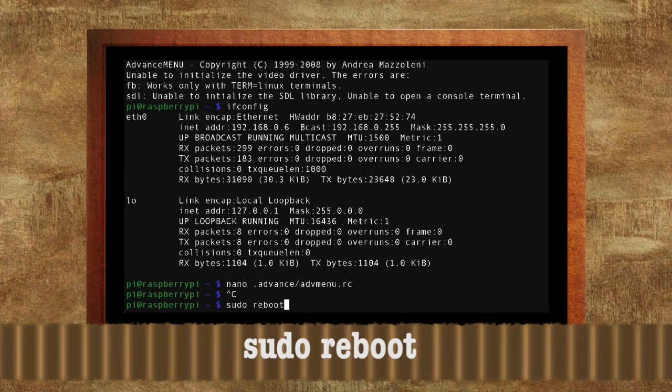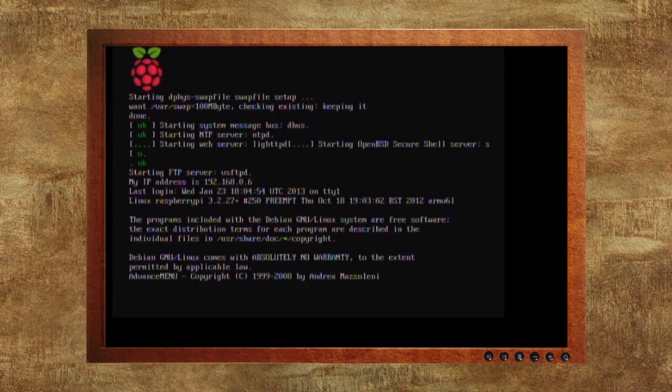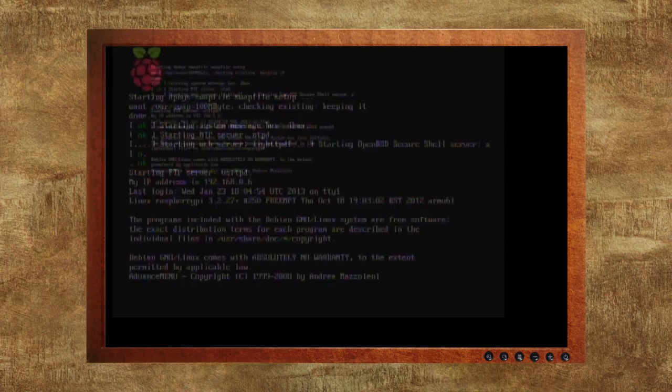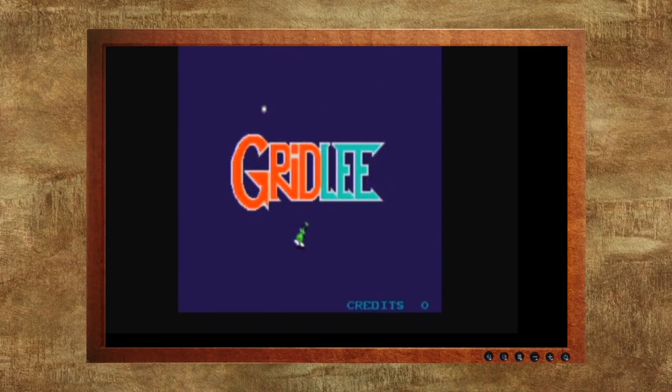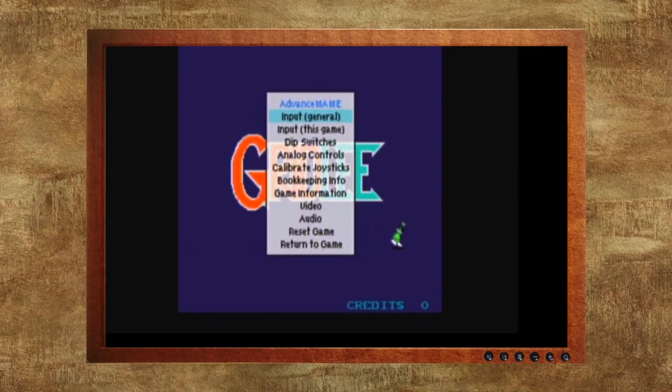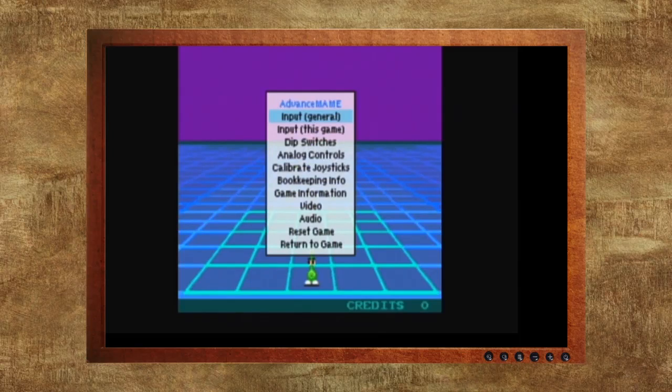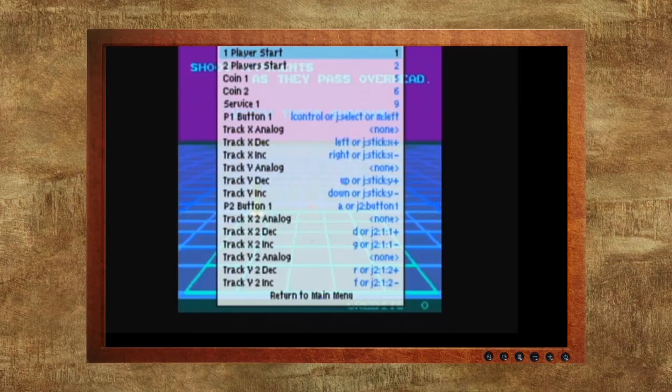Once you reboot the Pi, you should now have joystick functionality. You can test this out by starting a game and just seeing if it works. If it doesn't work, you may need to remap your joystick and the buttons. To do this, while you're in the game, hit the tab key on your keyboard. This will bring up calibration options where you can choose the joystick input and remap the game options to match your joystick and your buttons.